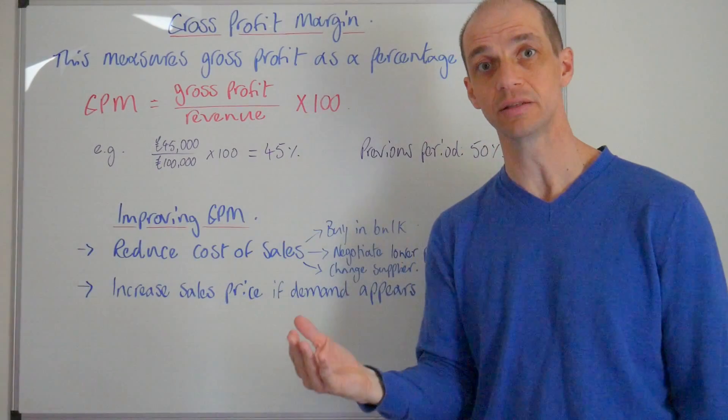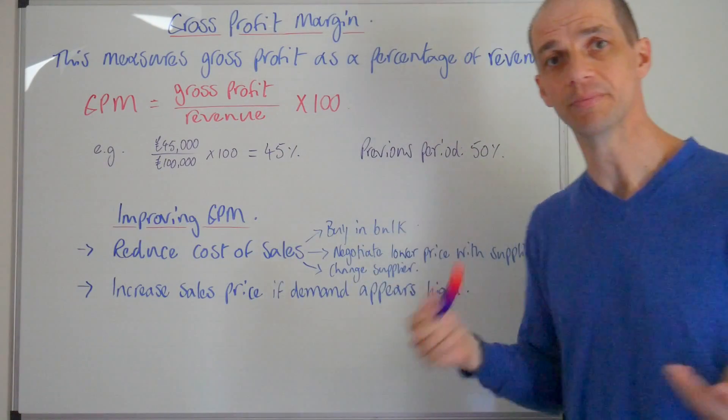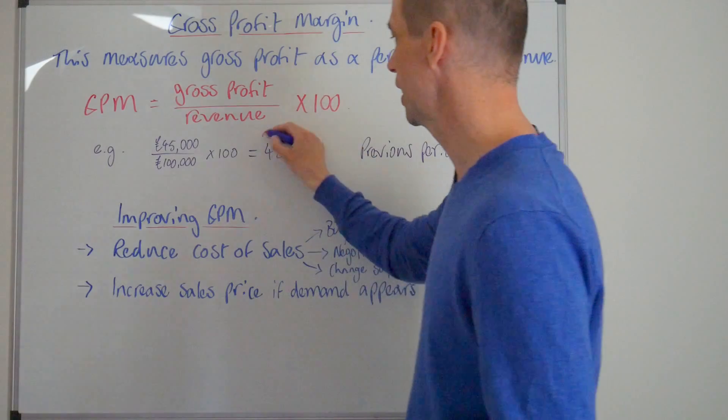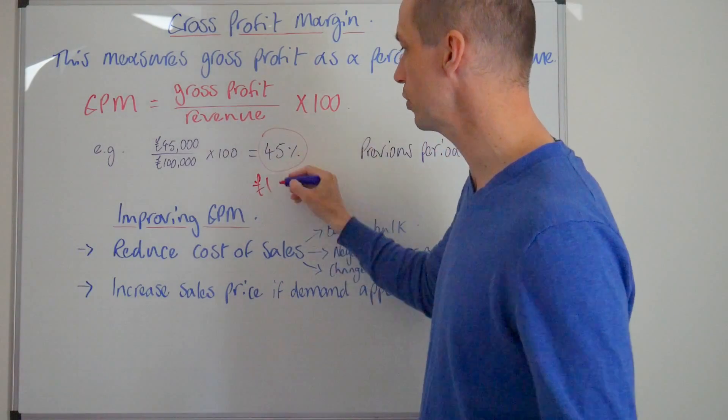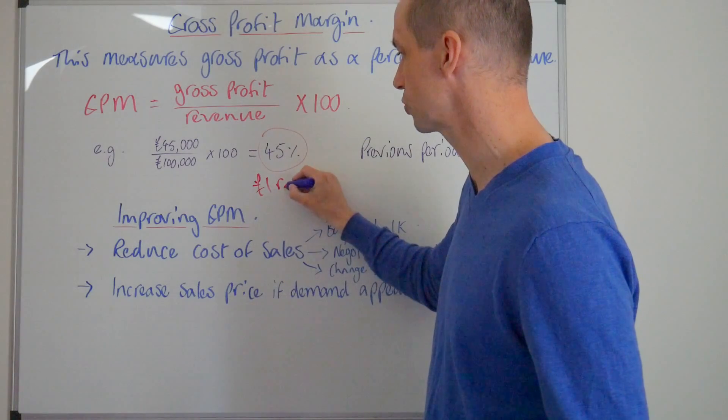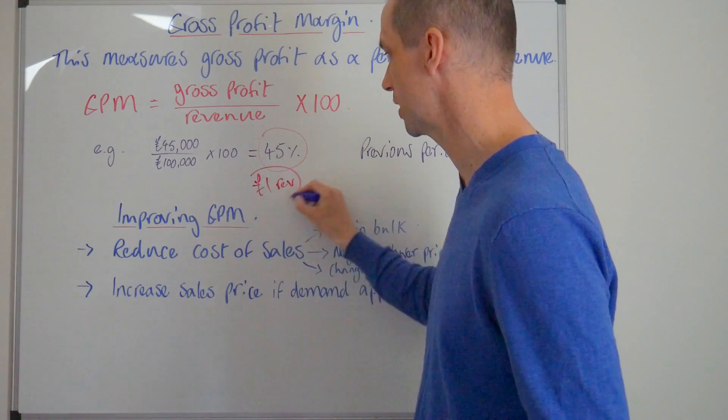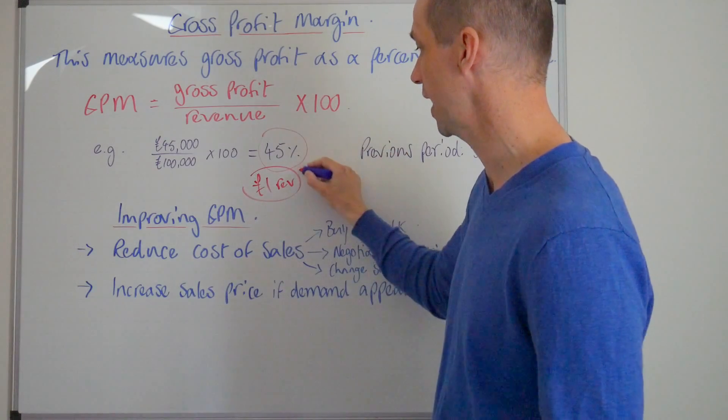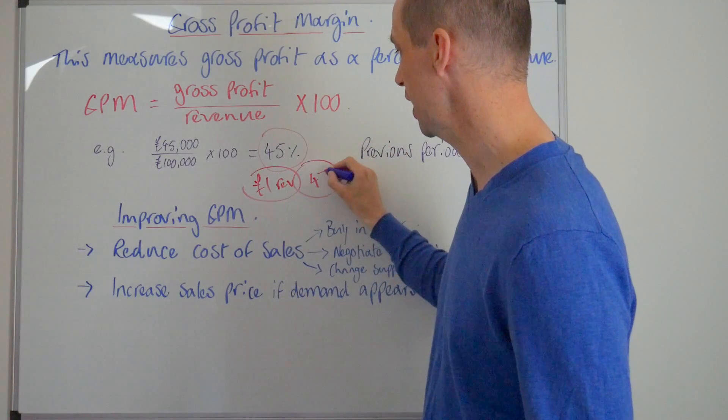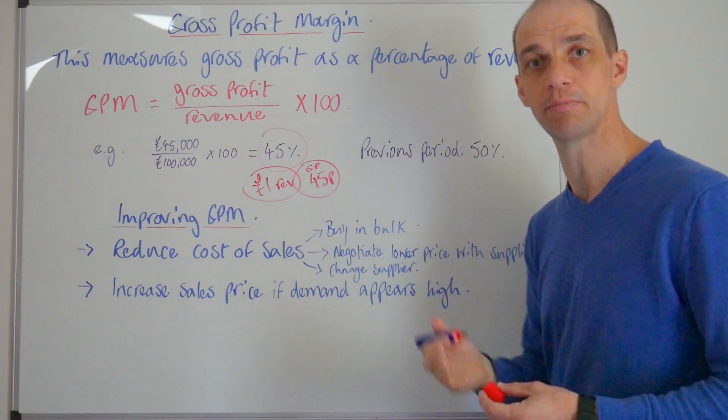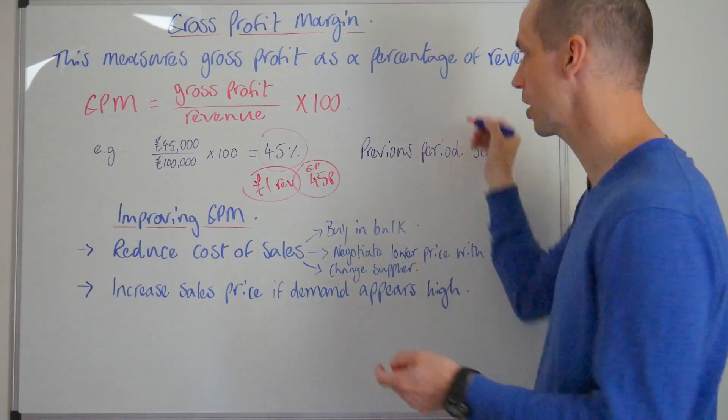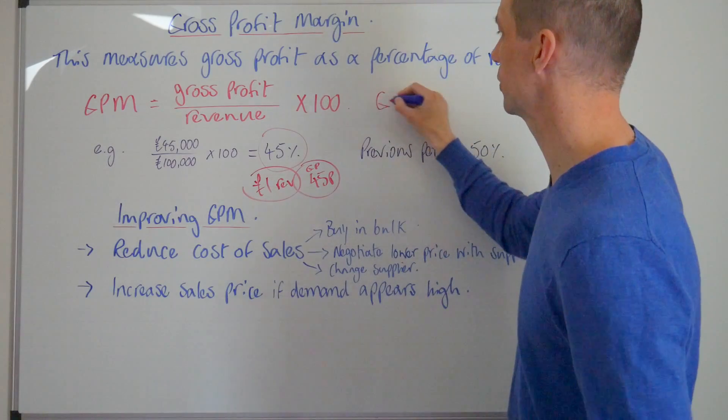So what does this tell us? Well it tells us that for every pound of income, every pound of sales or sales revenue that's actually generated, then the business actually retains 45p as gross profit. So that is our gross profit on every pound of revenue in essence.